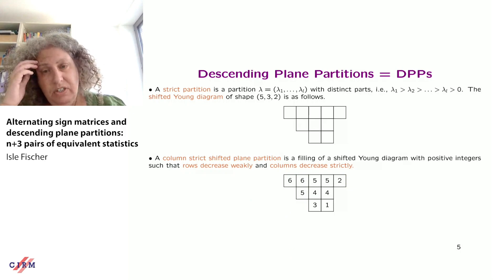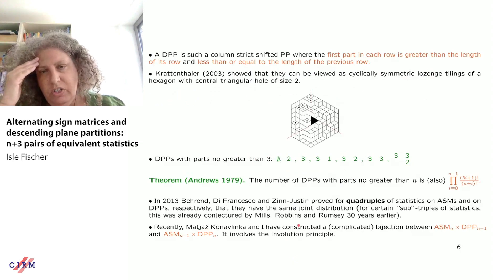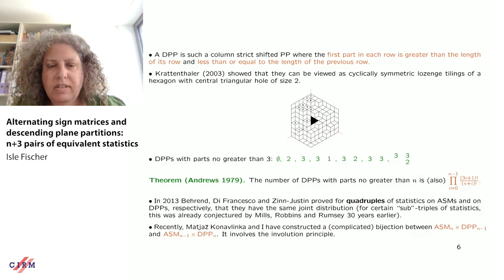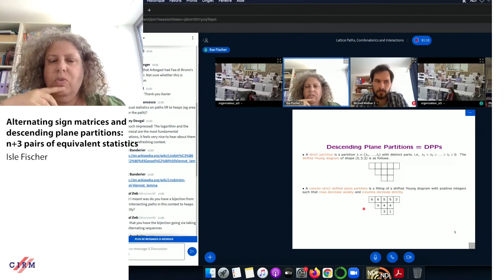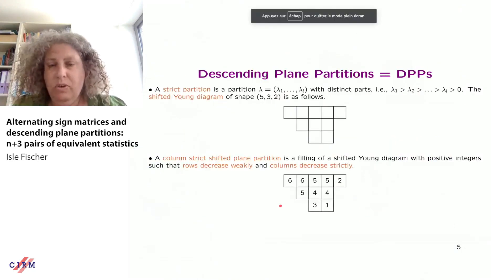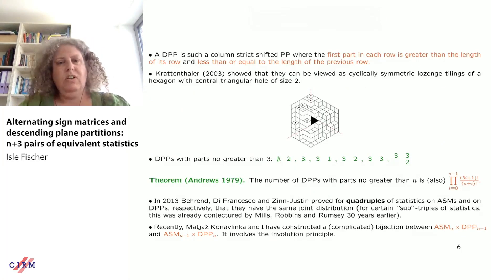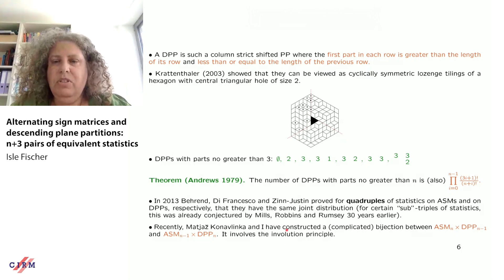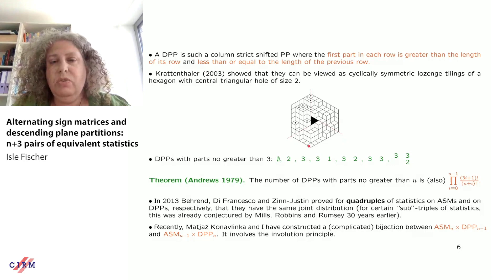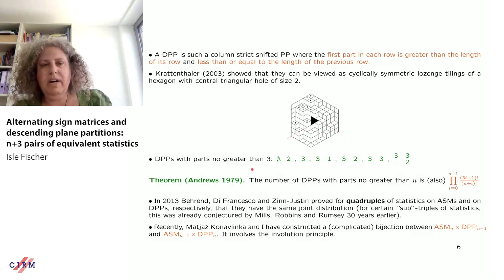For a descending plane partition we need two further conditions: the first part in each row must be greater than the length of its row, and also less than or equal to the length of the previous row. These objects are equivalent to certain lozenge tilings — specifically, lozenge tilings of a hexagon that are cyclically symmetric and have a central triangular hole of size two.